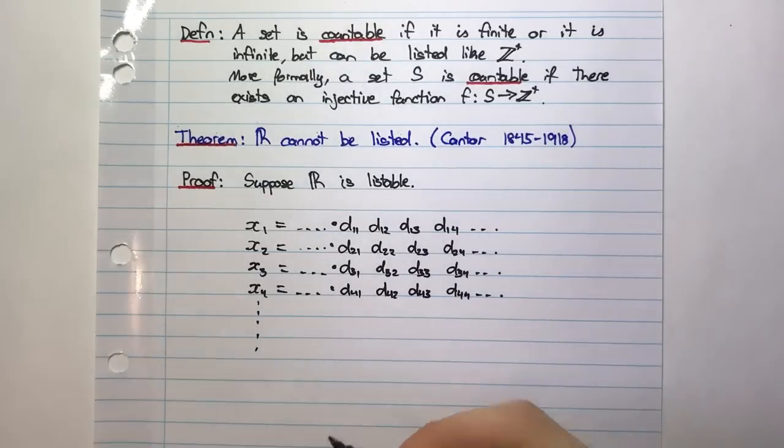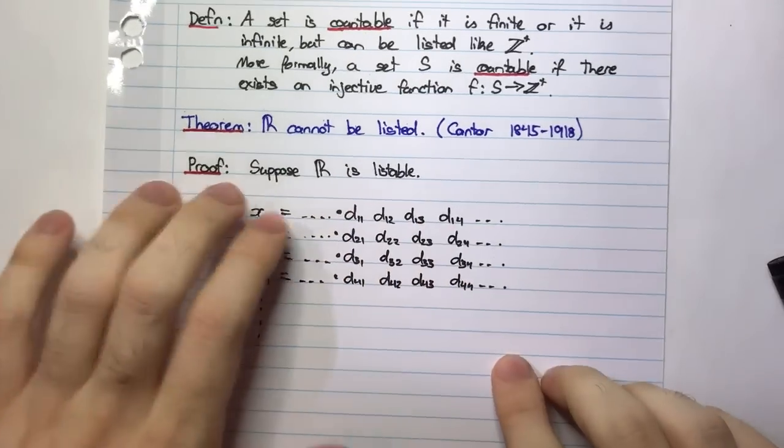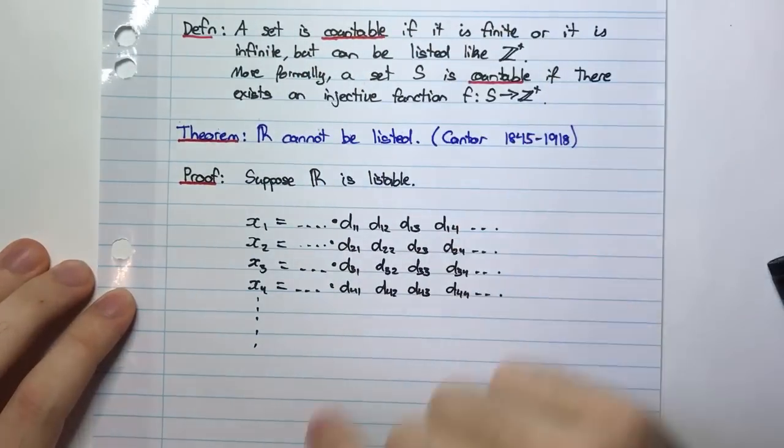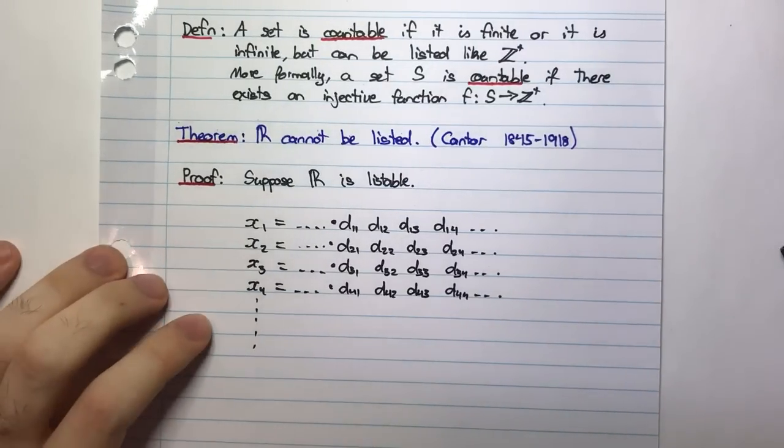Now what I'm going to do is I'm going to create a real number using this sort of matrix form here. You can see that I have some sort of a matrix if I do this. I have a matrix of numbers here. And what I'm going to do is I'm going to take the diagonal of this matrix.